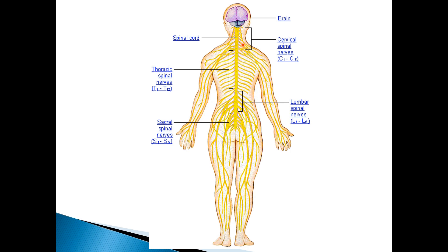If you damage your spinal cord higher up, those nerves are really important for controlling some of your major organs and also the diaphragm, which is a muscle that sits below your lungs and contracts and relaxes to inflate and deflate your lungs. If you damage the pathway between your brain and your diaphragm, your brain can no longer tell it what to do and you could potentially suffocate. This is why the spinal cord is encased within big chunks of bone called vertebrae.